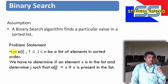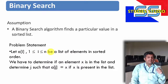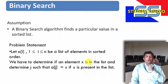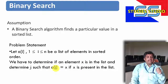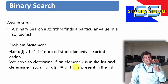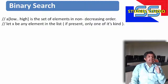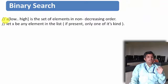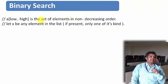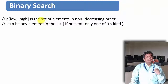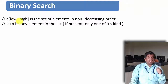The problem statement says: if A[i] is an array where i varies from 0 to n and the elements are in a sorted order, then we have to determine if an element x is in the list at location j or not. If x is available at the jth location of array A, then we will say that element x is available at that location. Basically, we will take an array with lower limit as low and higher limit as high, with all elements kept in a non-decreasing order, and x is the element we are going to find.